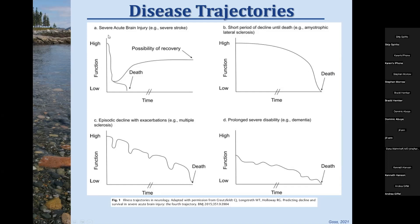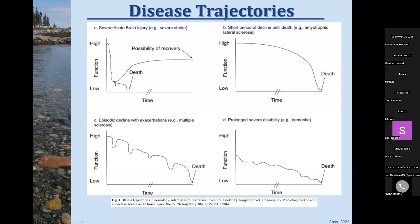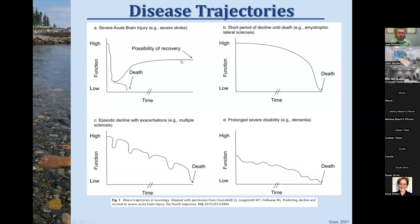Dr. Holloway has named a fourth trajectory, where a stroke or traumatic brain injury causes a sudden drop from healthy and independent living within hours. From there, patients may continue to decline toward death, but with stabilization and time there's a possibility of recovery to a new stable point where function is not where it was originally. Palliative care often gets involved around that uncertainty of where the patient is going. Keep this diagram in mind when talking to ICU patients post-stroke — it really is a fork in the road.